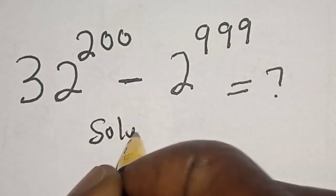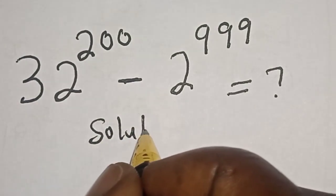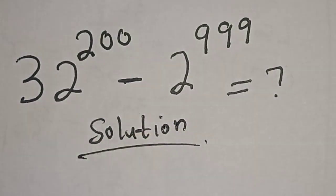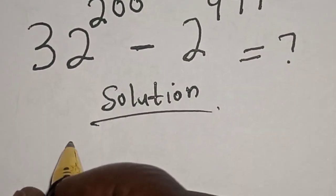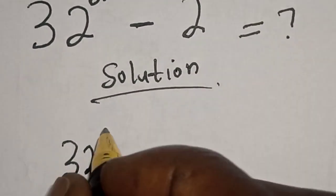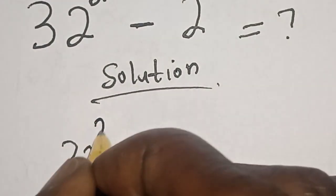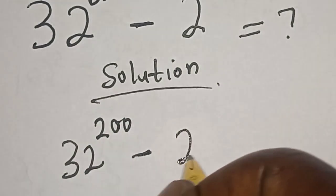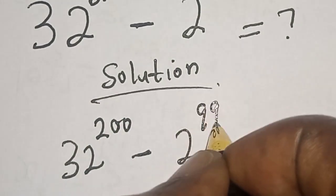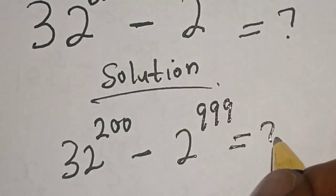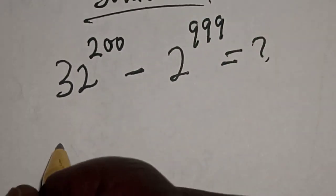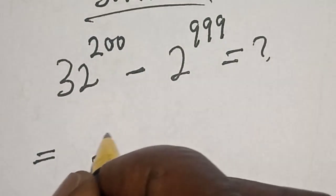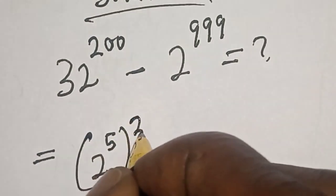Solution: we have the given question — 32 raised to power 200 minus 2 raised to power 999 is equal to what. This is equal to: 32 is 2 raised to power 5, raised to power 200.